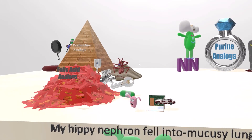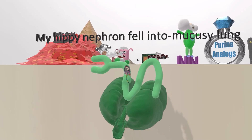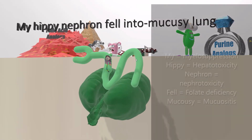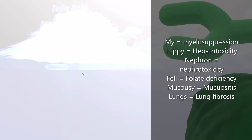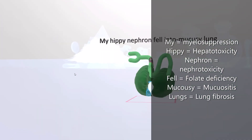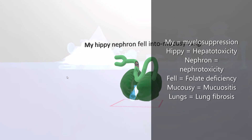Next to the foliage pile is a fallen sign for the adverse effects of methotrexate. The sign reads: 'my hippie nephron fell into mucousy lungs.' 'My' reminds us of myelosuppression, 'hippie' of hepatotoxicity, 'nephron' of nephrotoxicity, 'fell' of folate deficiency, 'mucousy' of mucositis such as mouth ulcers, and 'lungs' of pulmonary fibrosis. These are all adverse effects of methotrexate.